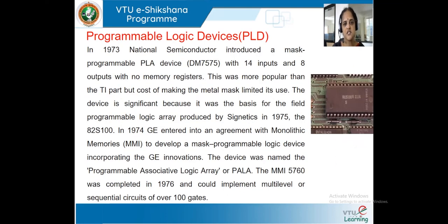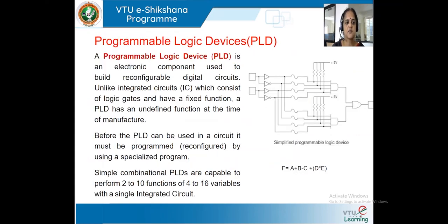By incorporating this technology, GE devised the first erasable PLD ever developed. This history is given just to understand the improvement that has taken place in the field of technology, and the effort put by researchers and engineers. In 1973, National Semiconductor introduced the mask-programmed PLD device called DM7575, with 14 inputs and 8 outputs but without many memory registers. In 1975, the 82-S100 came into picture. In 1974, GE entered an MOU with Monolithic Memories (MMI) and they developed the MMI 5760, completed in 1976.